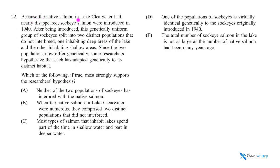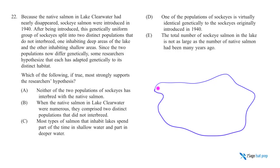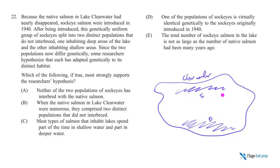Because the native salmon in Lake Clearwater had nearly disappeared, we introduced sockeye salmon back in 1940. Let's say this is our lake — it's called Clearwater. After being introduced, this genetically uniform group of sockeye split into two distinct populations that do not interbreed: one inhabiting the deep areas of the lake, the other the shallows. So S for shallow, D for deep — that's where you'll find the two groups of salmon.